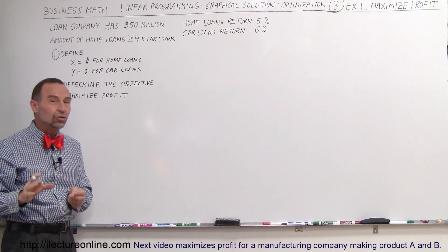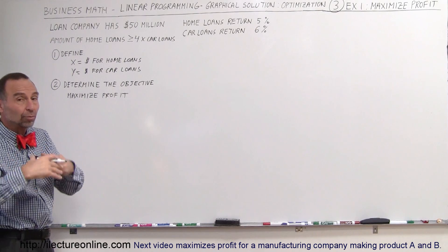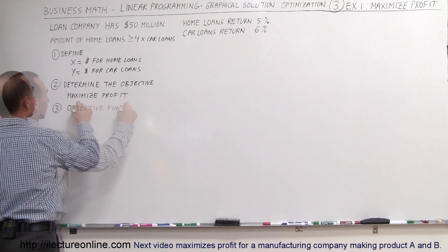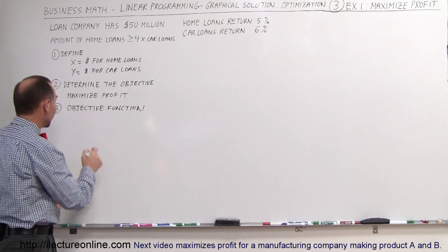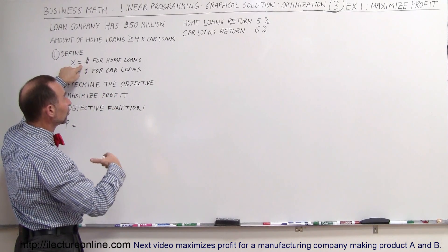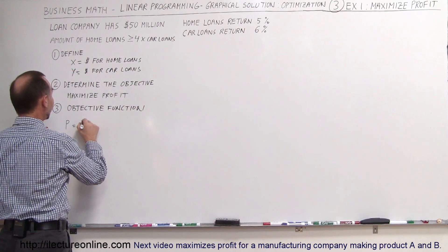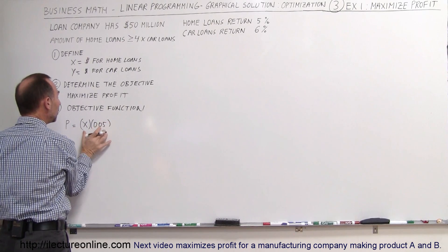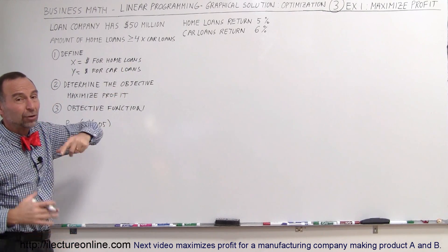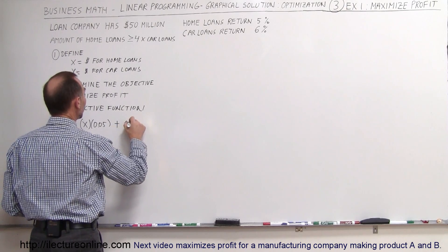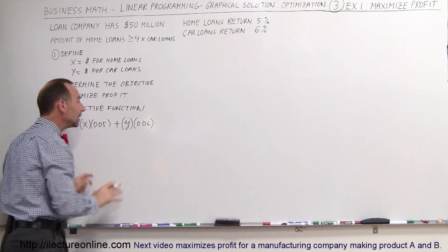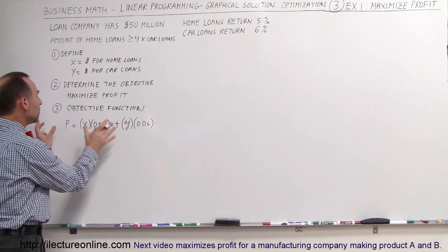Once you've determined what the objective is, you need an objective function — an equation that will calculate the profit, cost, or whatever else you're looking for. So you want to determine the objective function. How do you determine the profit? The profit, which is going to be a function of X and Y, is going to be equal to the amount of dollars you're going to expend on home loans times the return. So it's going to be X times 0.05 — that will be the amount of money you'll make off the home loans. Plus Y, the amount of dollars you'll give out on car loans, times the return, which is 0.06. This will be the objective function, and you'll want to maximize this quantity.